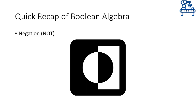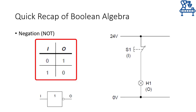The first logical operation and the simplest one is the NOT or negation operation. It is a single input operation that will flip the input at its output. If you provide it a 0, it will give you a 1, and if 1 is applied at the input, the output would be 0. The NOT operation is represented by a truth table shown over here.